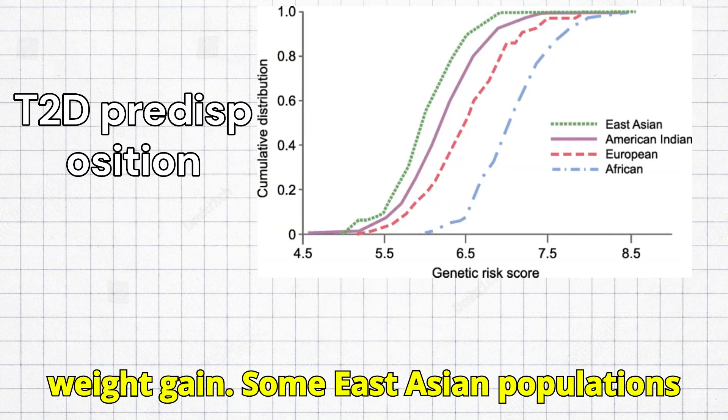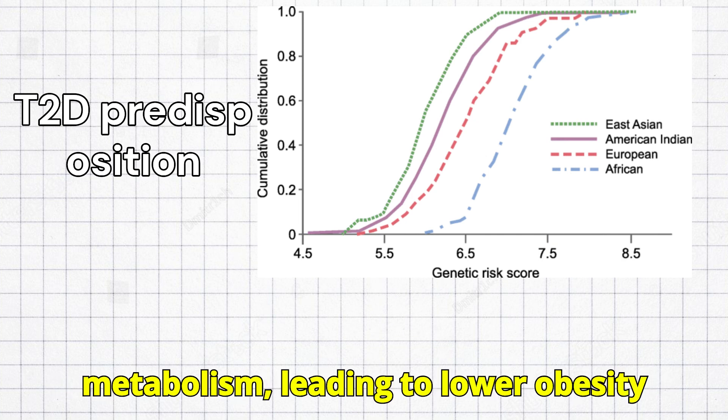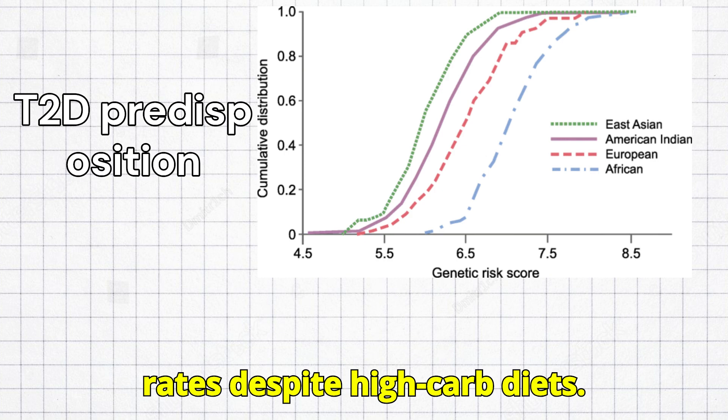Some East Asian populations may have a genetic advantage in glucose metabolism, leading to lower obesity rates despite high-carb diets.